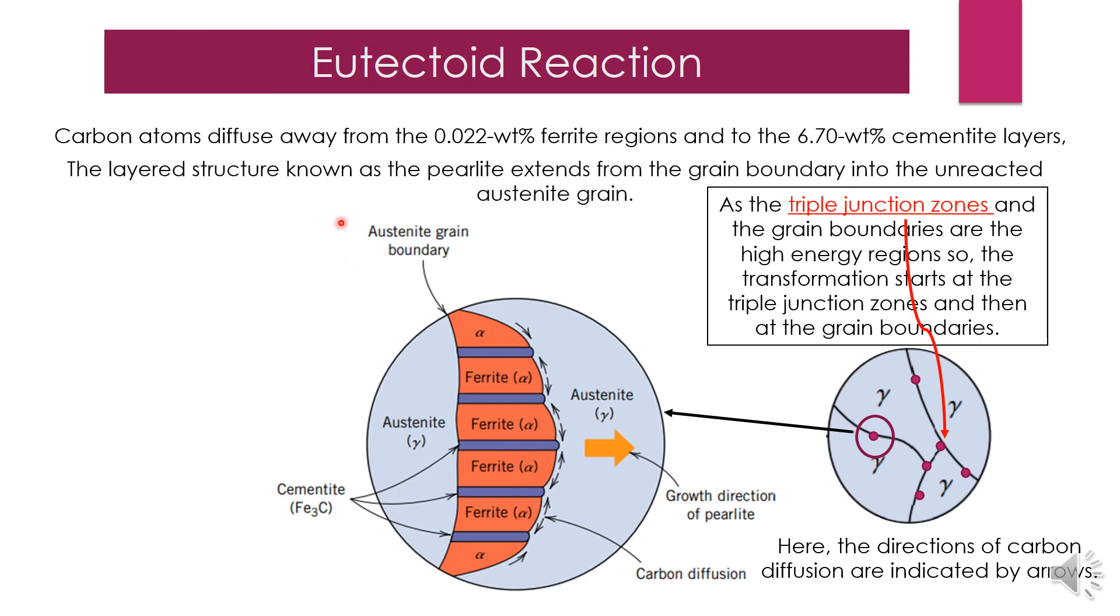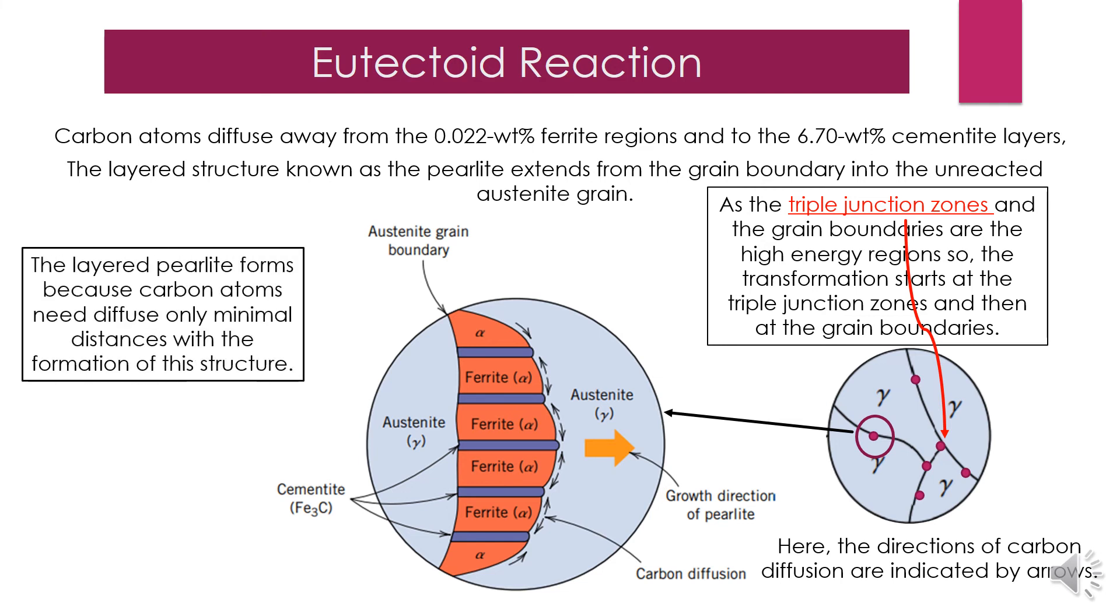The layered structure, this layered structure known as pearlite, extends from the grain boundary into the unreacted austenite region. The layered pearlite forms because carbon atoms need only minimal diffusion distances with the formation of this structure.